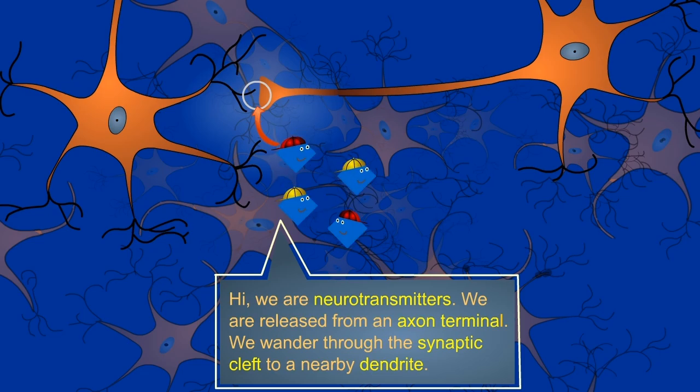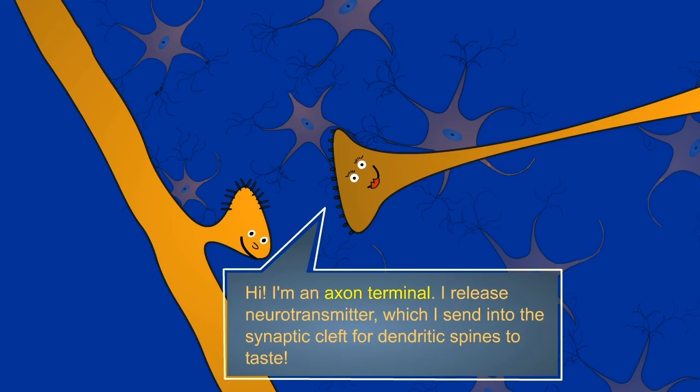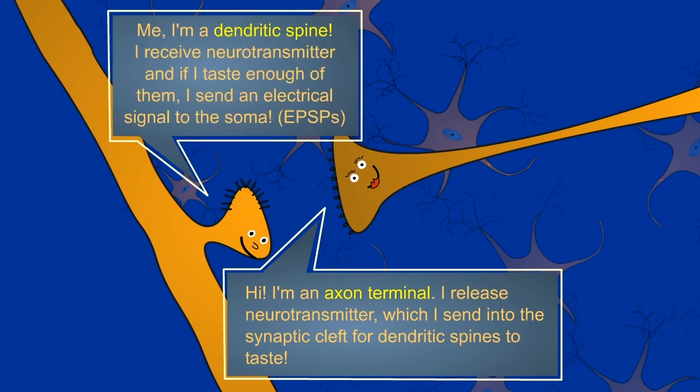Neurotransmitters — hi, we're your neurotransmitters. We are released from an axon terminal. We wander through the synaptic cleft to a nearby dendrite. Hi, I'm an axon terminal. I release neurotransmitter, which I send into the synaptic cleft for dendritic spines to taste. I'm a dendritic spine. I receive neurotransmitter and if I taste enough of them, I send an electrical signal to the soma.